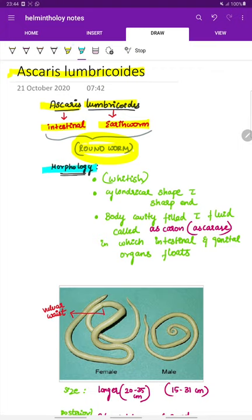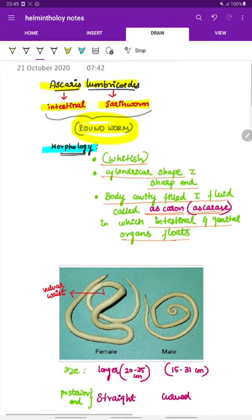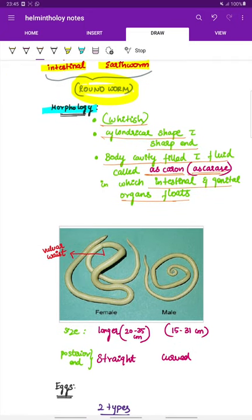First, the morphology of Ascaris Lumbricoidus. It is whitish in color, cylindrical shape with a sharp end, and its body cavity is filled with fluid which is called Ascaris. In that body fluid, the intestinal and genital organs float. This is the morphology of roundworm, which is Ascaris Lumbricoidus.